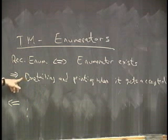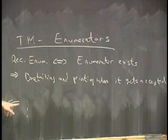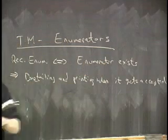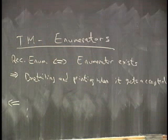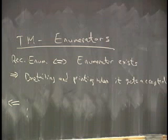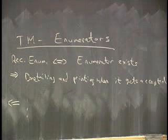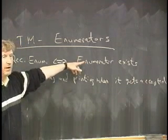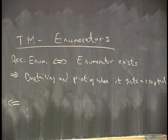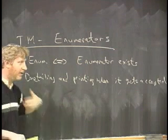This was the harder side. Let's do the easier side. Somebody gives you an enumerator — it spits out strings one at a time with a pound sign in between each one. How do you come up with a recognizing machine? You give the recognizing machine a string; it's got to decide whether it accepts that string and give a yes when the answer is yes. Start the enumerator, let it go. Every time it spits out a string, compare it to the string you were given as input. If they match, you say yes. If they don't match, let the enumerator keep going.